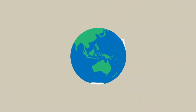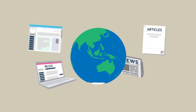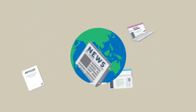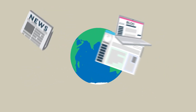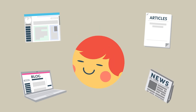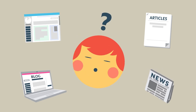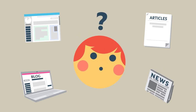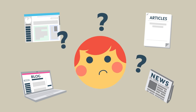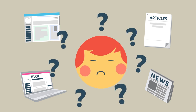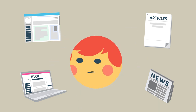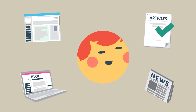Living in a digital world means that we can access information on almost any topic, at any time and from anywhere. When trying to find resources for your assignments at uni, having access to all this information can be overwhelming. You can't believe everything you read, and you need to think critically about the information before you choose to use it.